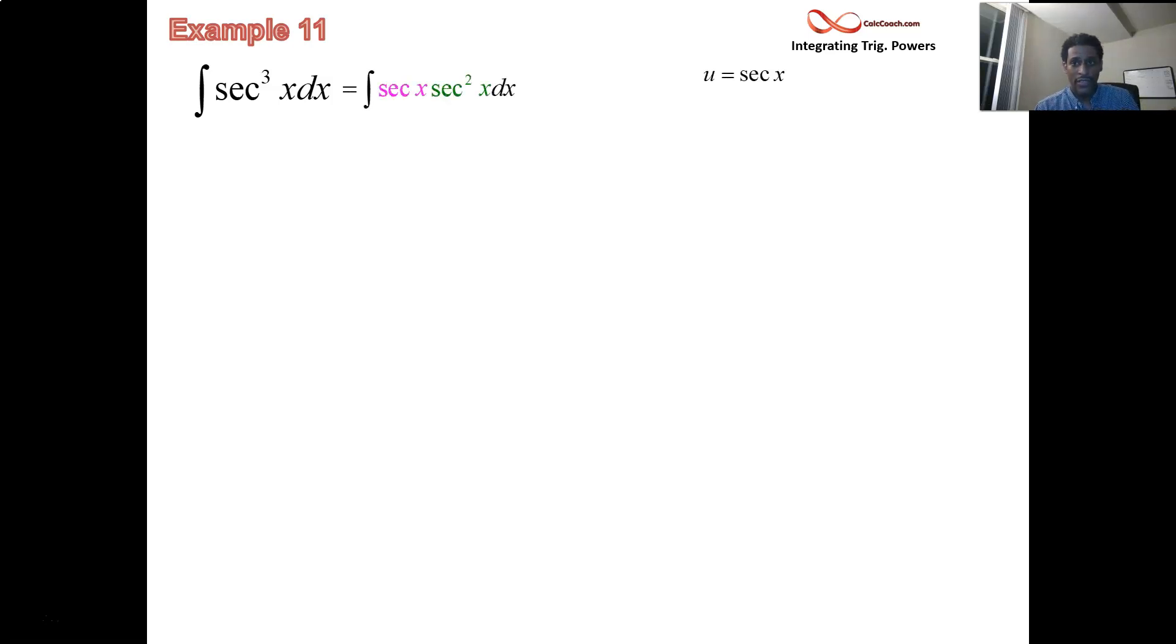And so choose one part to be secant, the other part to be secant squared. So du is going to be secant, and secant squared is going to be dv. Remember how integration by parts works? You take the derivative of u, you take the integral of dv. What is the derivative of secant? Secant tangent. What is the integral of secant squared? What function has secant squared as its derivative? Tangent. How do you set up the formula for integration by parts? You multiply uv, and you subtract the integral of v du. So you're going to have secant x tan x minus the integral of secant x tan squared x.